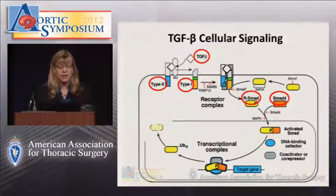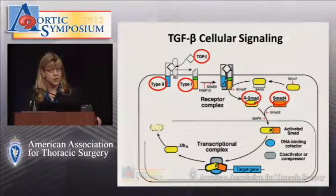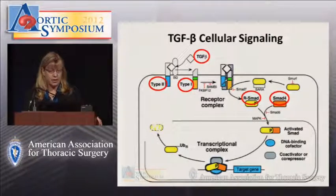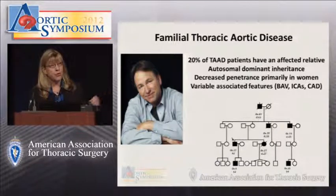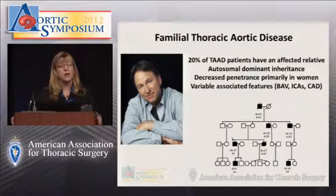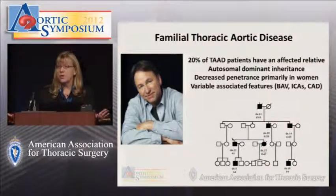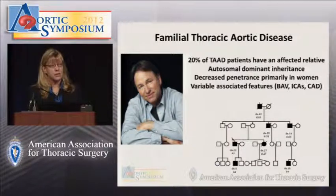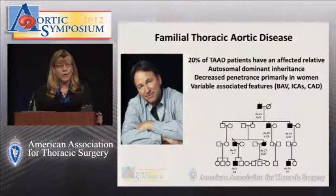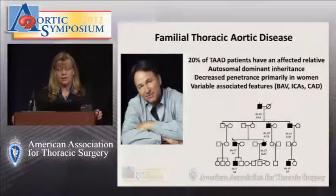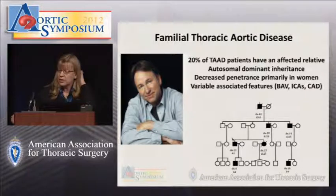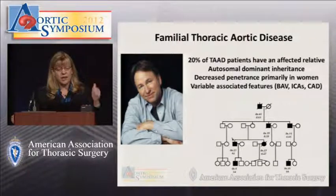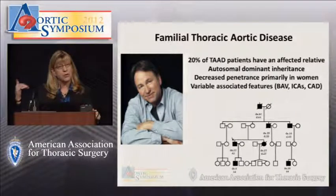TGF-beta signaling is very important for maintaining expression of contractile proteins in the smooth muscle cell. That's the syndromic presentation. Turning to genes identified in people without syndromic features who clearly have an inherited predisposition running in their family — about one-fifth of patients have an affected family member, which has been elegantly worked out by Dr. Elefteriades and his group.